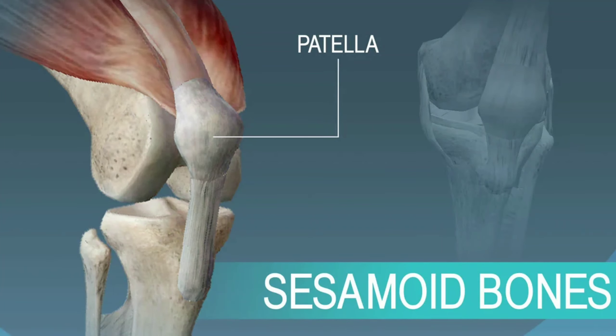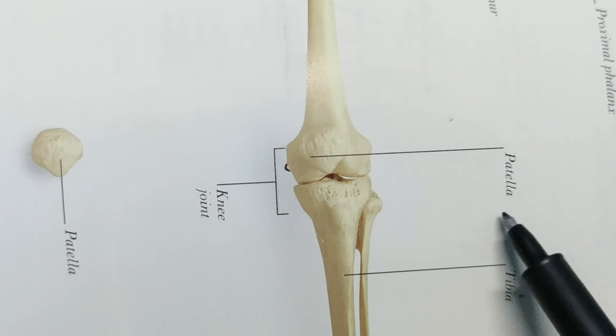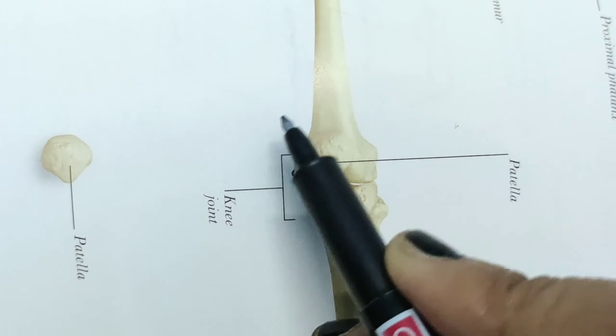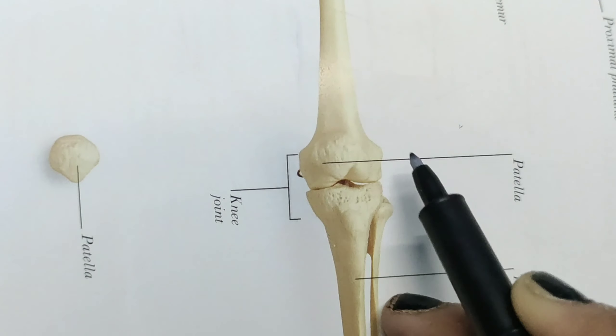The fifth type is sesamoid bones. These are small, round bones. Functionally, they work to protect our bodies. An example is the kneecap.